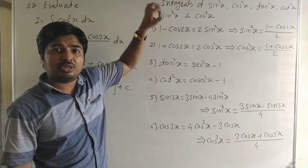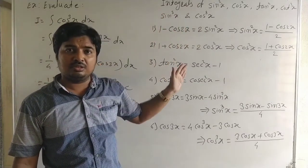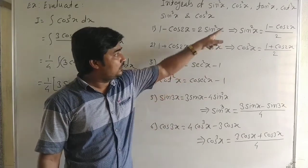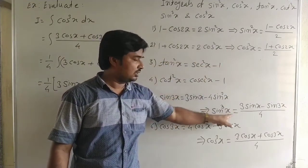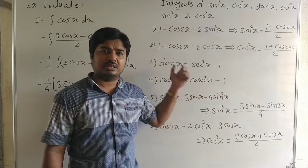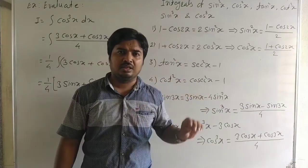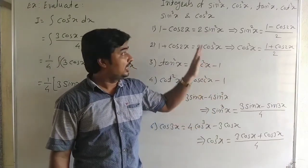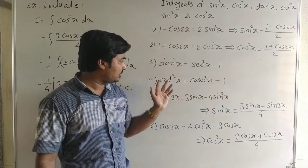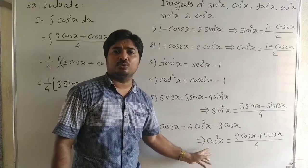In summary: if the problem asks to find the integral of sin²x, cos²x, tan²x, cot²x, sin³x, or cos³x, first use the appropriate trigonometric formula to convert it, and then find the integral. This is the key approach for all these forms.